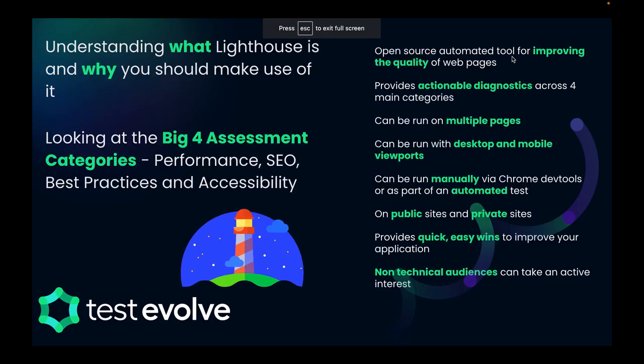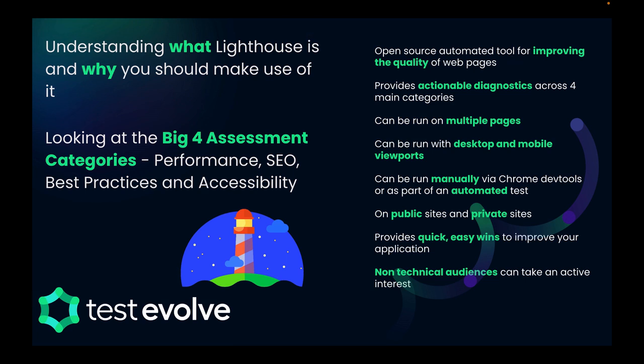So let's start to explore what it is. Google themselves say — and this is an open source Google tool — that Lighthouse is an open source automated tool for improving the quality of web pages. One limitation is that this isn't going to work for native mobile apps, but from a web point of view we can use this with a desktop and a mobile viewport in mind. When we run a check it's going to give us actionable diagnostics — things we can physically address, fix, and improve across those four main categories.